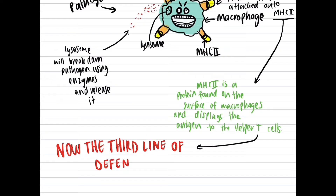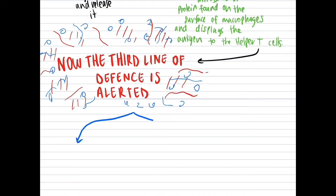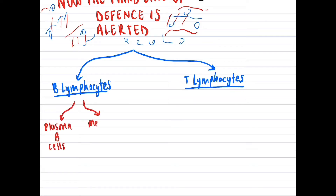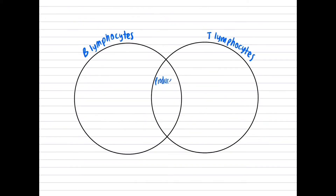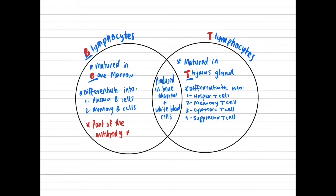By displaying the fragment of the antigen, the helper T cell is alerted, bringing us to the third line of defense: acquired immunity. The third line of defense involves two types of white blood cells — B lymphocytes and T lymphocytes. The B cell can differentiate into plasma B cells and memory B cells, whereas the T cell can differentiate into four types: helper T cell, cytotoxic T cell, memory T cell, and suppressor T cell. Both B and T cells are produced in the bone marrow, but B cells mature in the bone marrow while T cells mature in the thymus gland. B cells are only involved in the antibody-mediated response, while T cells can also be part of the cell-mediated response.